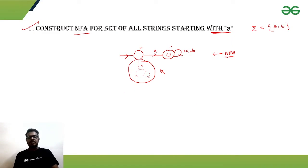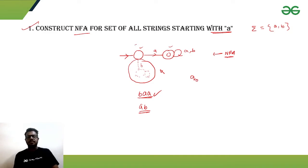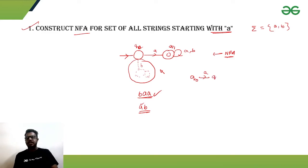Let's talk about what a dead configuration is. Our given language accepts all strings starting with small 'a'. Suppose we take a string not starting with 'a' and one that does start with 'a'. Starting from state q0 as the initial state and q1 as our final state: given q0, if we get small 'a', we will go to state q1.